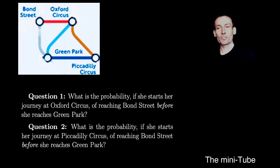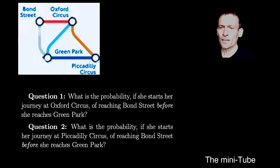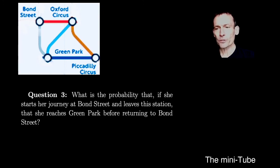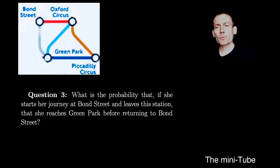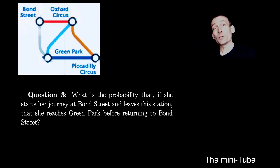So there are two possible starting points: Oxford Circus and Piccadilly Circus. The question is: what's the probability, starting at either of those stations, that she reaches Bond Street before Green Park? I could have picked any two stations on the full tube map and asked the same question — but there would be many more starting points. I could also ask question three: what is the probability that if she starts her journey at Bond Street but leaves, she reaches Green Park before returning to Bond Street on this same kind of random journey?